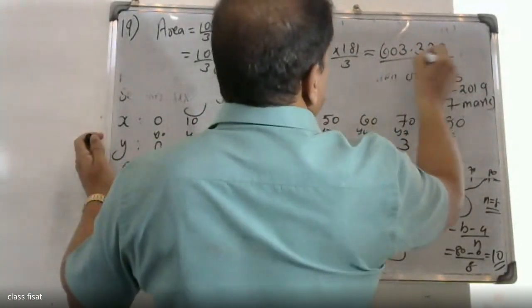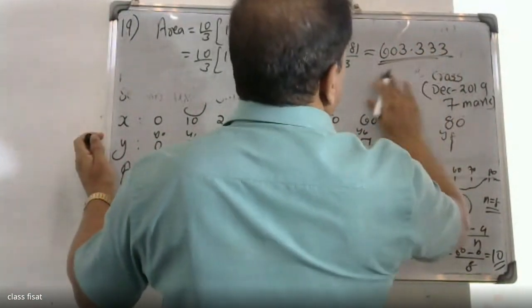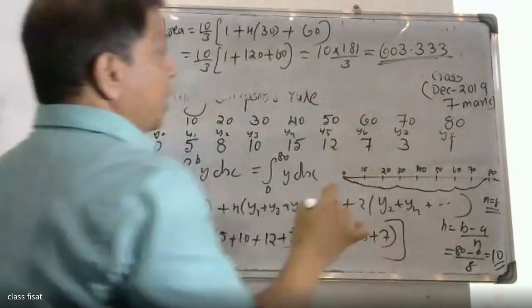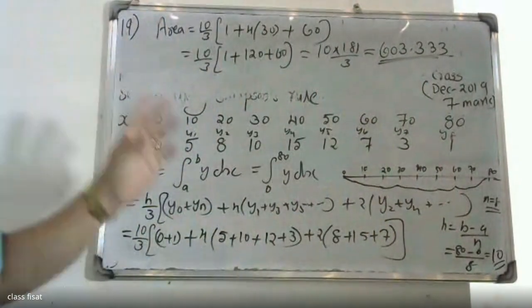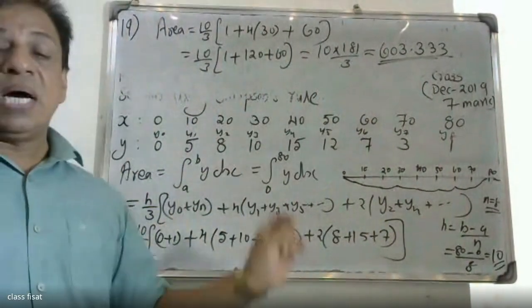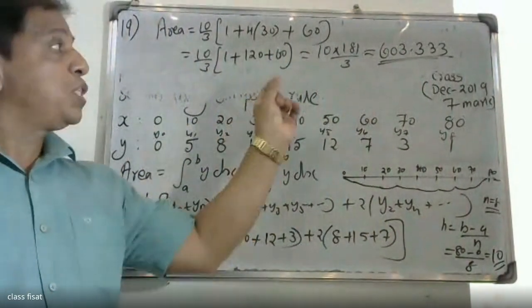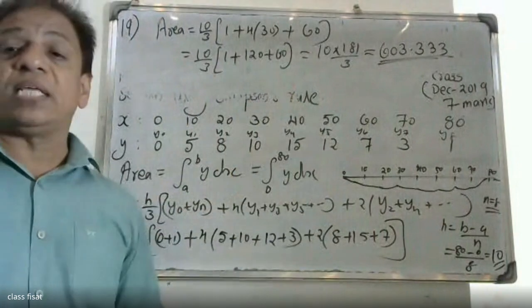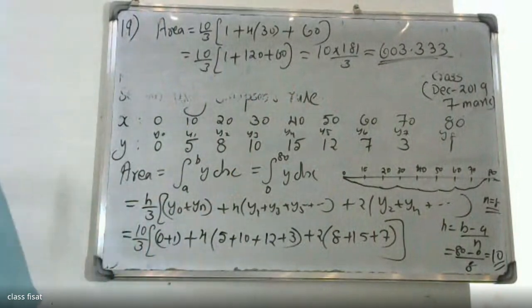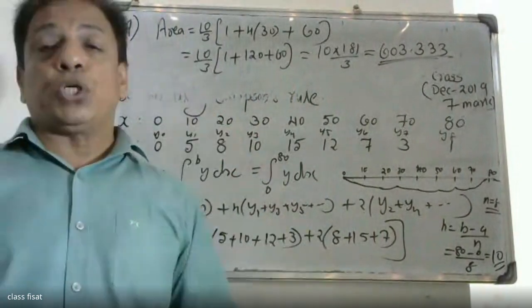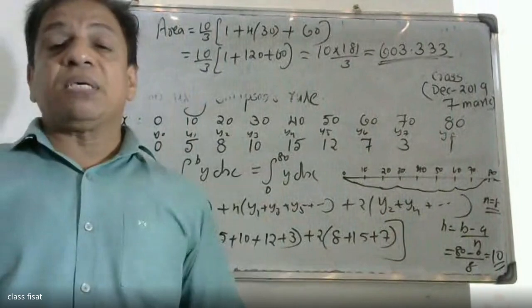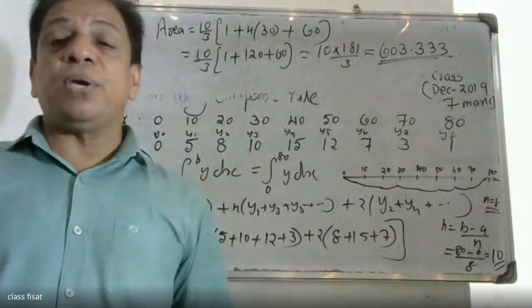The area of the cross-section is 603.333 square meters. This is our answer, calculated using Simpson's one-third rule.